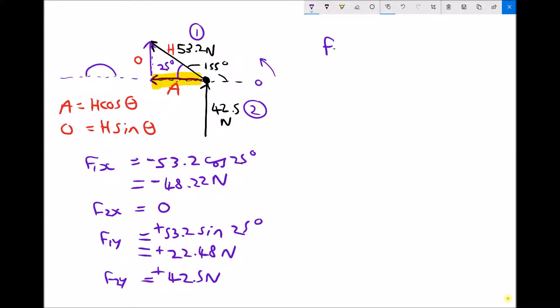So the resultant force, FR, has an x component and it has a y component. And the way that we find the x component is by adding the other x components together. So we've got F1X is minus 48.22, and F2X is just 0. Therefore, FRX is going to be a negative 48.22 Newtons. We then find the y component of the resultant by adding the y components together. So we've got plus 22.48, and to that we're adding 42.5, and that gives us a y component for the resultant of 64.98.